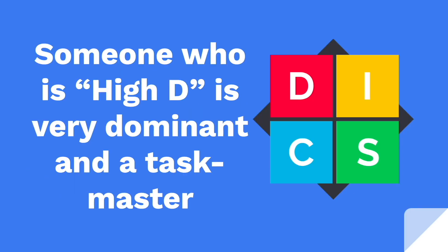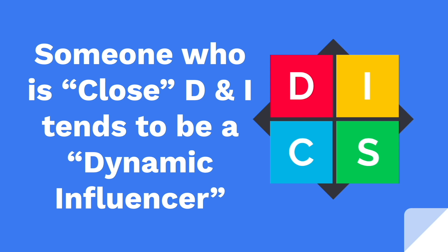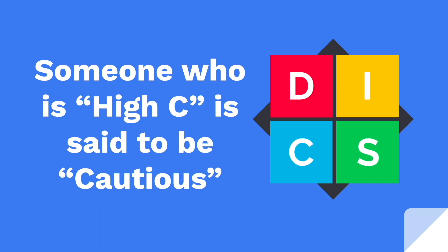Most people have one of two scenarios: either one letter that's high and much higher than the others, or two letters that are the highest and somewhat close together. That does make a difference in how you define their behavior and approach. For instance, someone who is high D is going to be very dominant — likely a real taskmaster. Someone whose D and I are close together and are the highest two letters is called the dynamic influencer, tending to be both task and people-oriented combined. Someone who is a high C, with other letters pretty low in comparison, will be considered very cautious and very task-oriented.